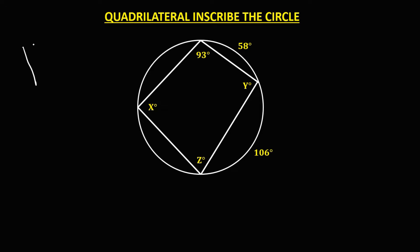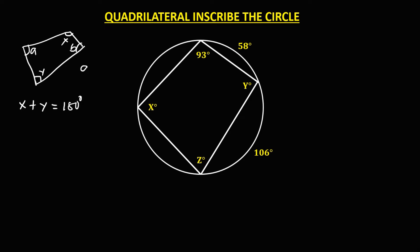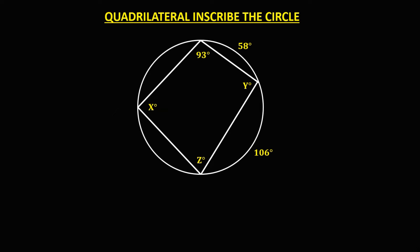So if we have this quadrilateral, this one is angle X and this one is angle Y. The sum of these two opposite angles is 180 degrees, so angle X plus angle Y is equal to 180 degrees. And if this is angle A and angle B, so therefore angle A plus angle B equals 180 degrees.